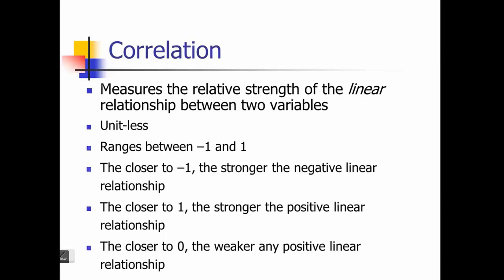Now, moving from correlation, we will go to linear regression. Correlation measures the linear relationship between two variables. Linear regression also does more or less the same thing, but there are many additional things that you can do with linear regression that you cannot do with correlation.